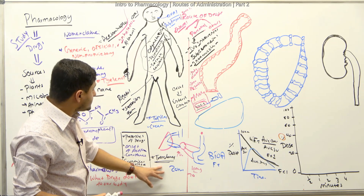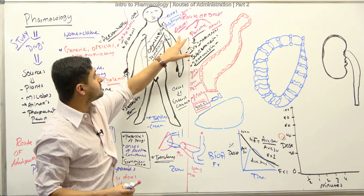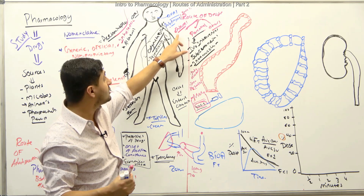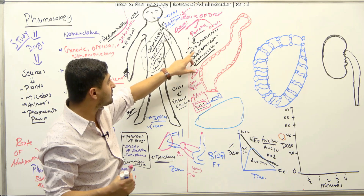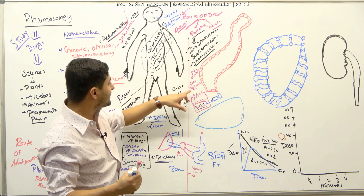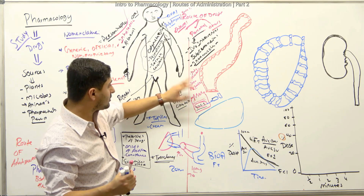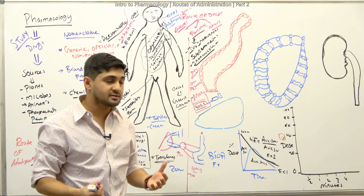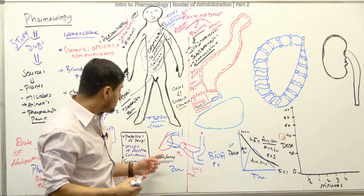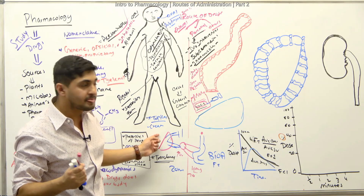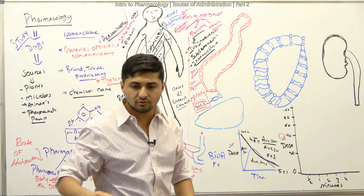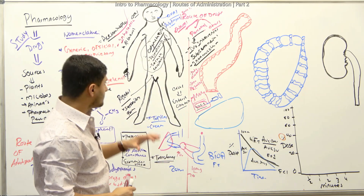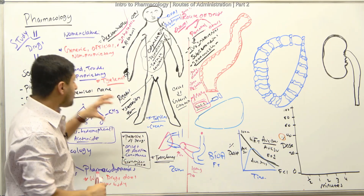So let's recap all the routes covered. For enteral: oral, sublingual, buccal, and rectal. For parenteral: intravenous, subcutaneous, intramuscular, intra-articular, and inter-arterial. Under other routes: nasal inhalations, oral inhalations, transdermal patches, and topical creams. There are also intrathecal and others, but these are the most important ones. This covers the different ways of administering drugs.